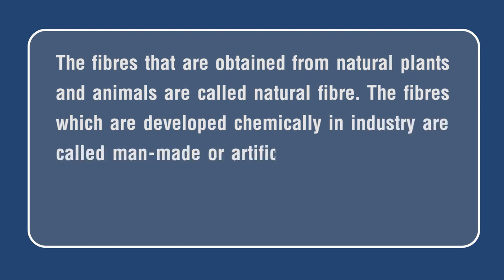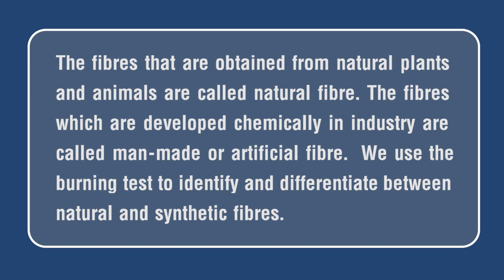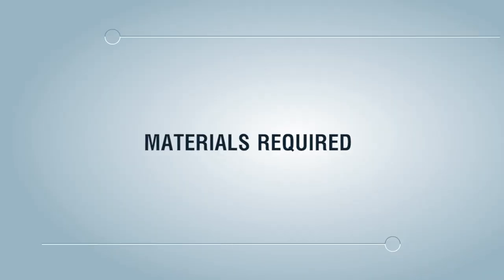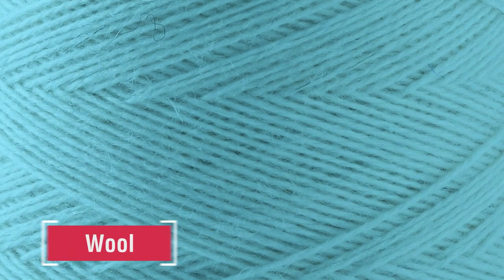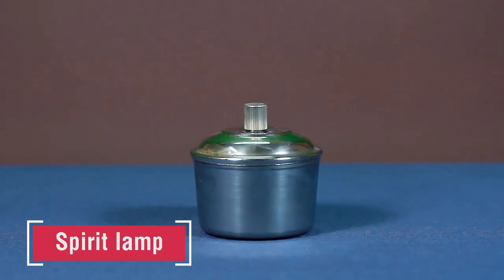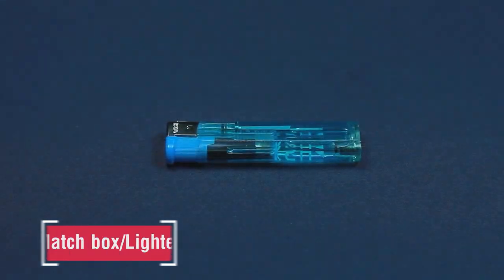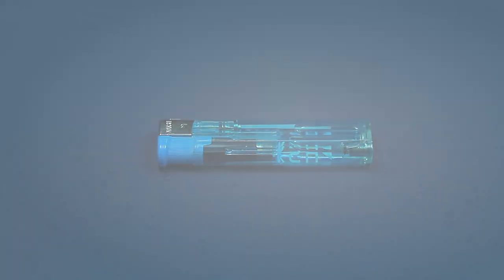The fibers which are developed chemically in industry are called man-made or artificial fibers. We use the burning test to identify and differentiate between natural and synthetic fibers. Materials required: threads of cotton, wool, polyester, and nylon; spirit lamp; forceps; lighter.